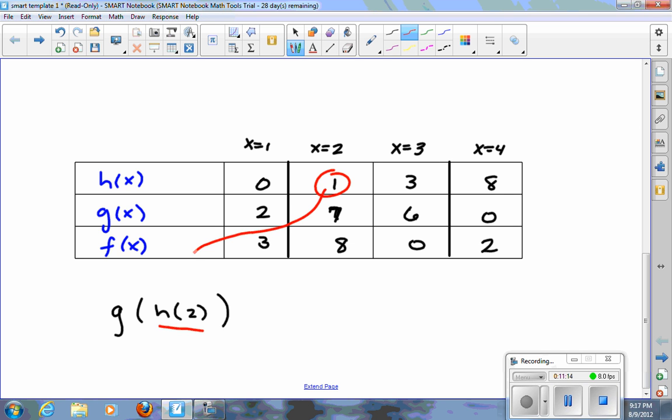So this 1 would go in this spot right here, and now I have a new problem, g(1). So g(1) is, here's my g function, here's 1. So g(1) is 2. So compositions aren't that bad, but they look intimidating.